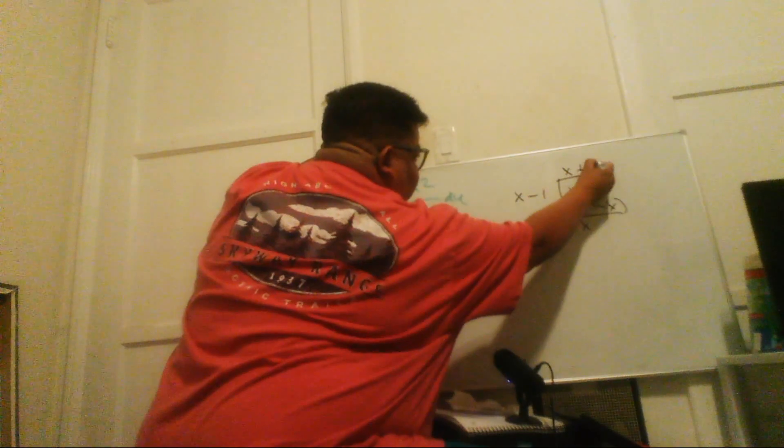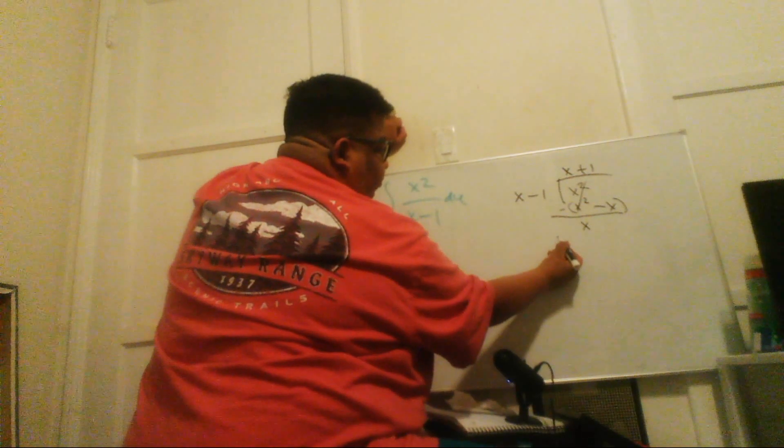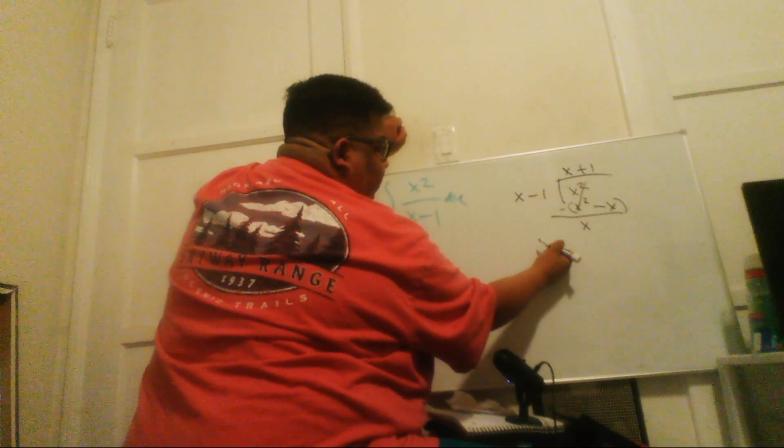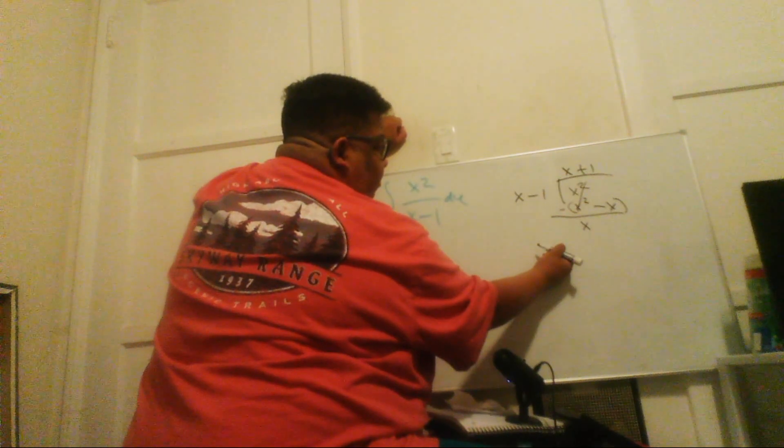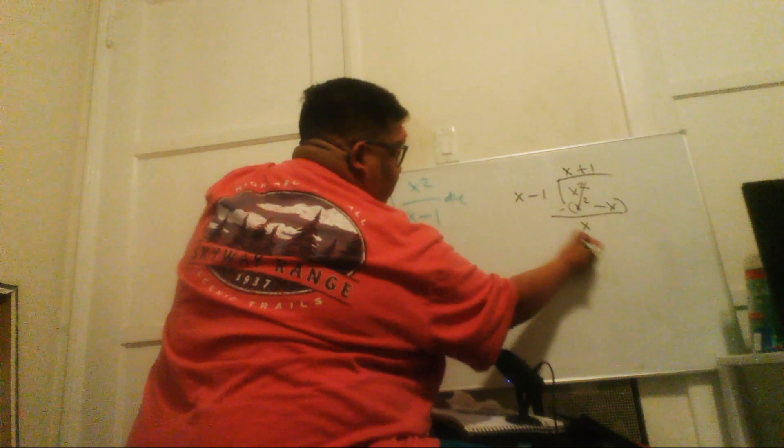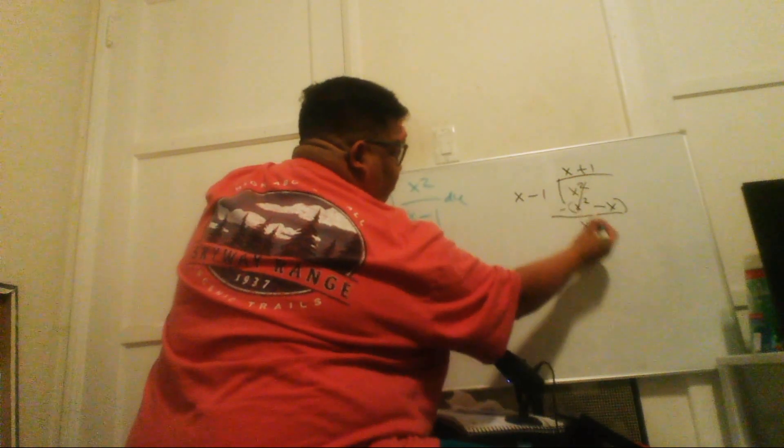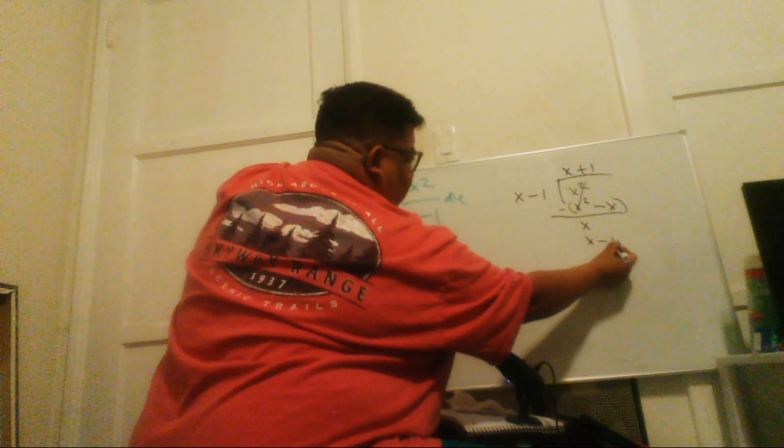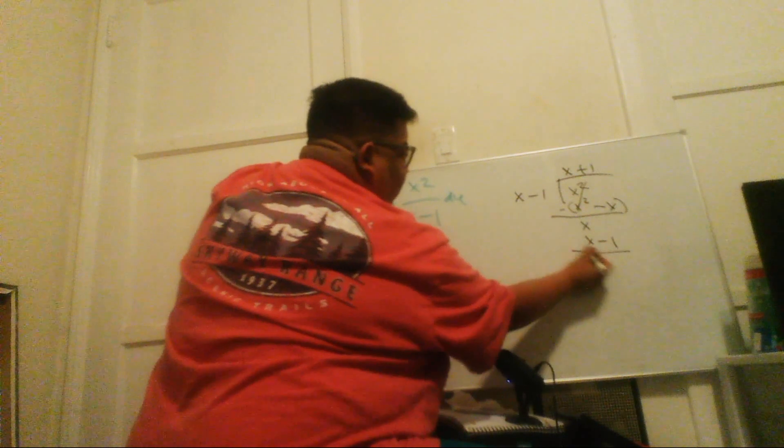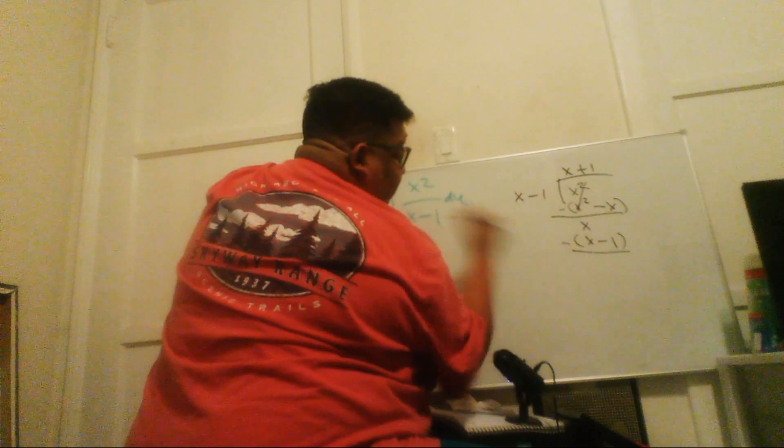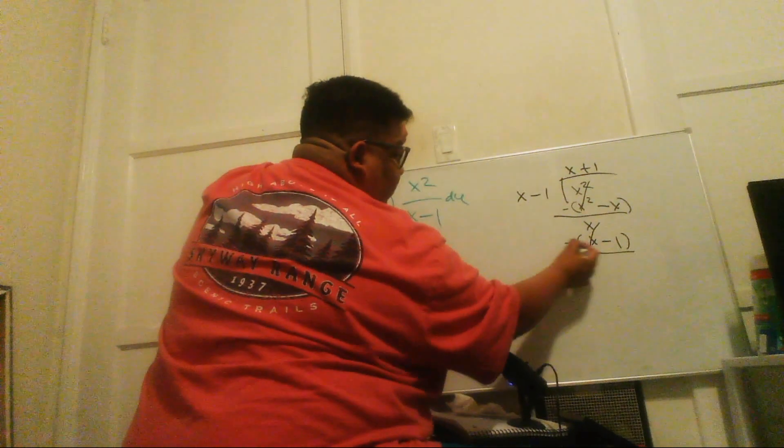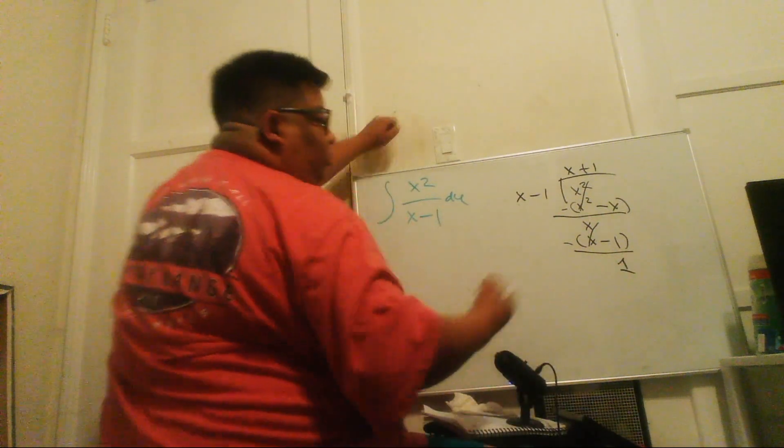So what do I multiply x by to get x? That will be plus 1. And then we're going to get x minus 1 plus 1, that will be minus 1. Then we subtract, so this cancels and we get minus minus, which becomes positive 1.